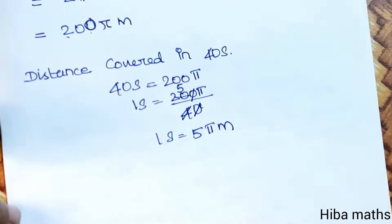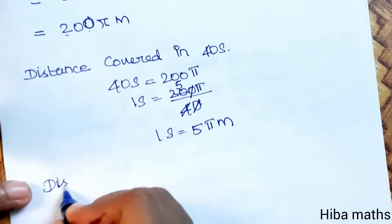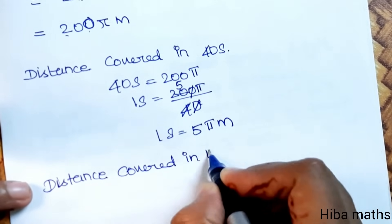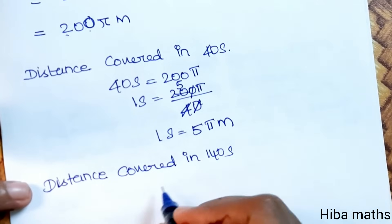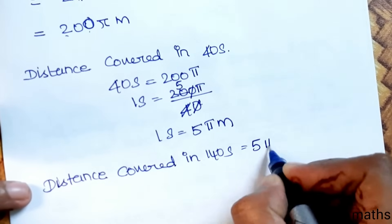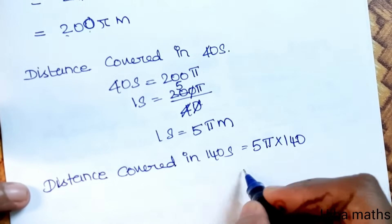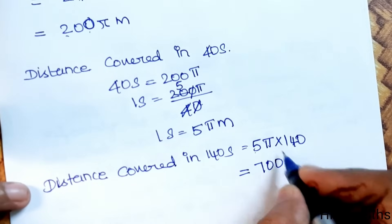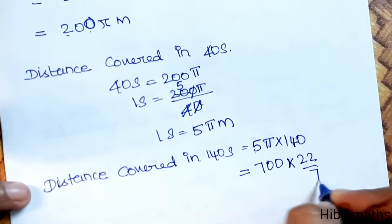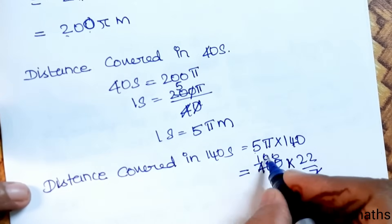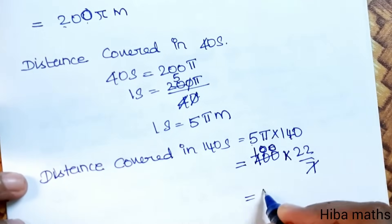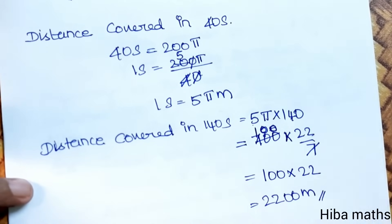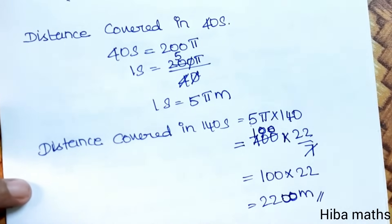Distance covered in 140 seconds is equal to 5π into 140, which gives 700π meters, approximately 2200 meters. So in 140 seconds, 2200 meters can be covered.